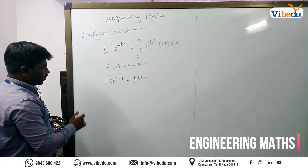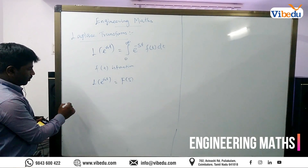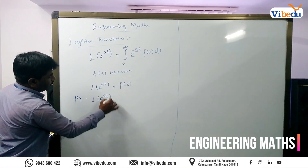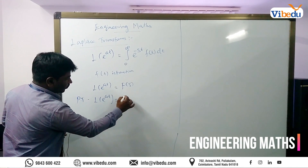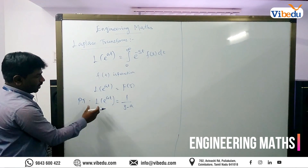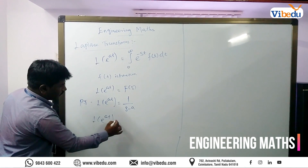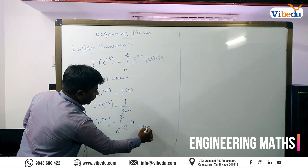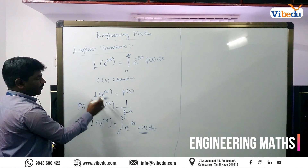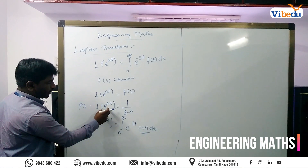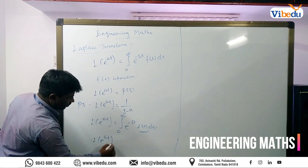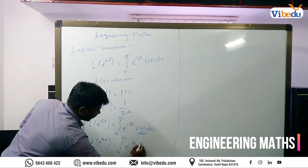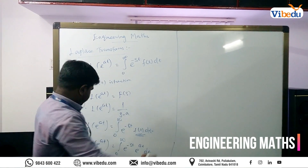Let's now discuss a small theorem: the proof that L{e^(at)} equals 1 divided by (s minus a). Using the formula, L{e^(at)} equals the integral from 0 to infinity of e^(−st) f(t) dt. Here f(t) is e^(at), so L{e^(at)} equals the integral from 0 to infinity of e^(−st) times e^(at) dt.